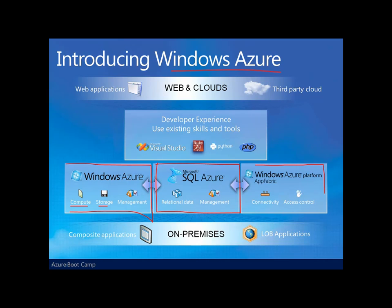Lastly, we have Windows Azure App Fabric. App Fabric today provides two capabilities, or two functions. One is access control — security. And the other, a service bus, to provide connectivity either between applications in Azure environments, or between applications that run on-premise, or between applications in the cloud and on-premise.